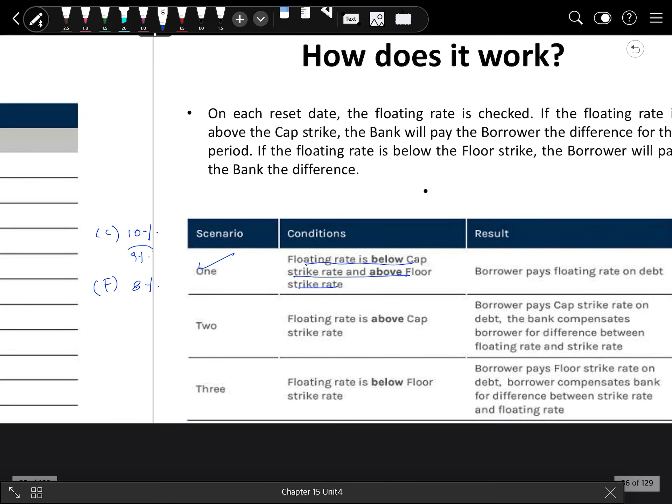The borrower simply pays 9% for it. No bank or borrower transaction will be made. Second case: floating rate is above cap strike rate at 12%. So the borrower will pay 10%, the cap rate, but the remaining 2% the bank pays. So the borrower pays cap strike rate on debt and the bank compensates the borrower for the difference between the floating rate and the strike rate. Third scenario: floating rate is below floor strike rate, that is 6%.